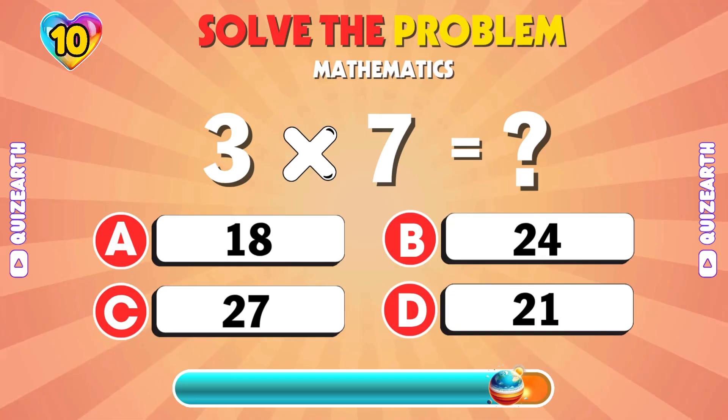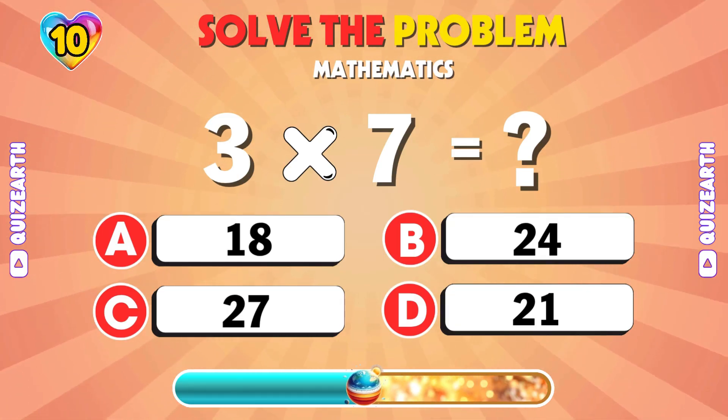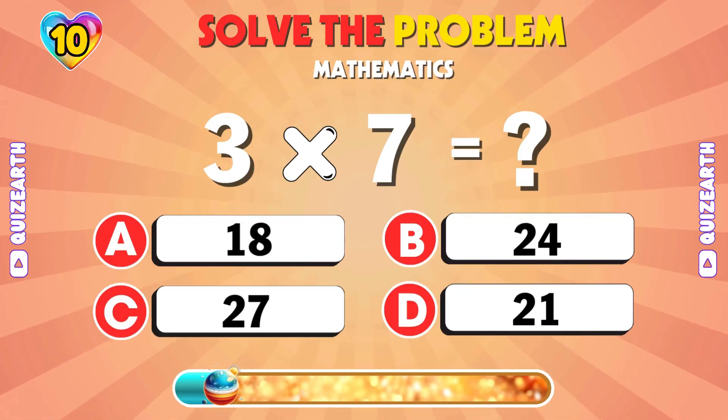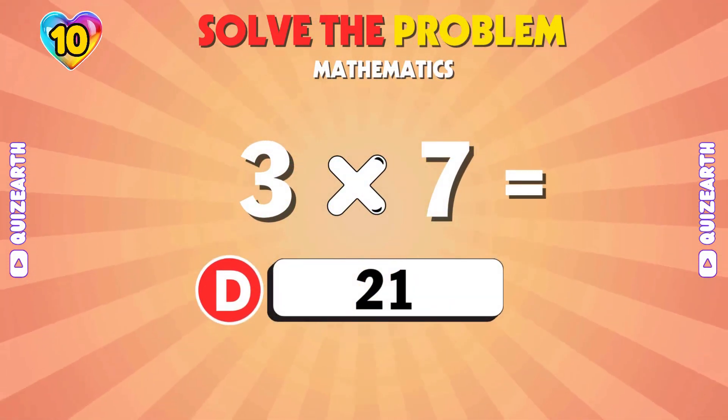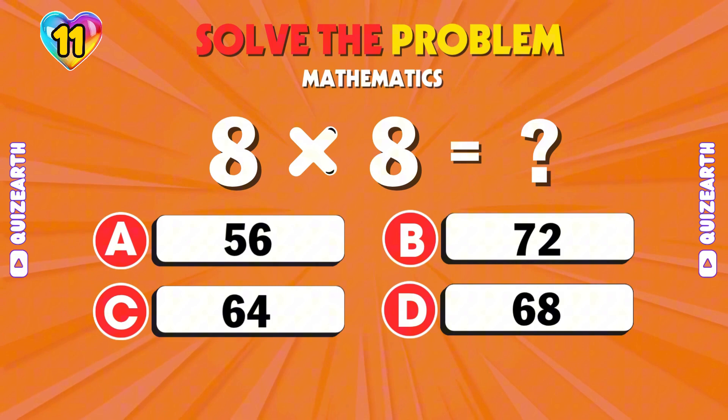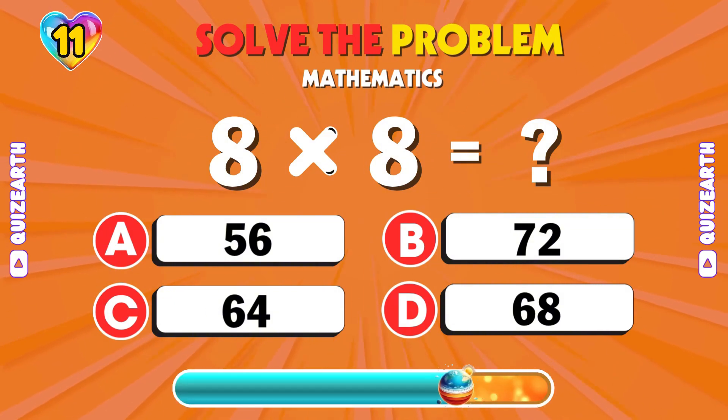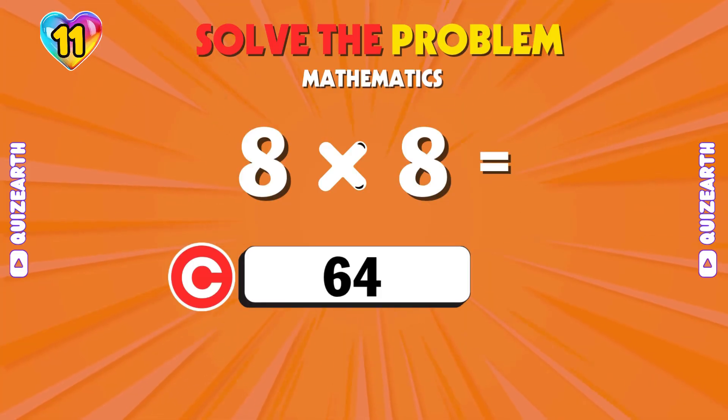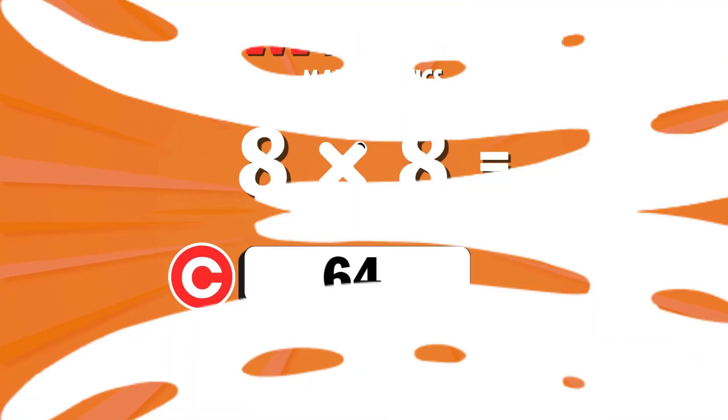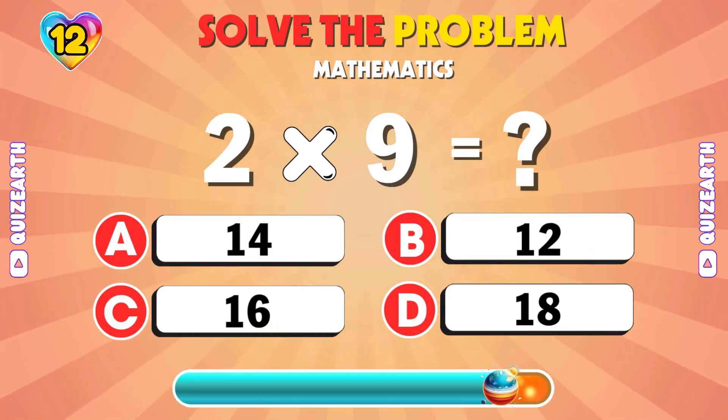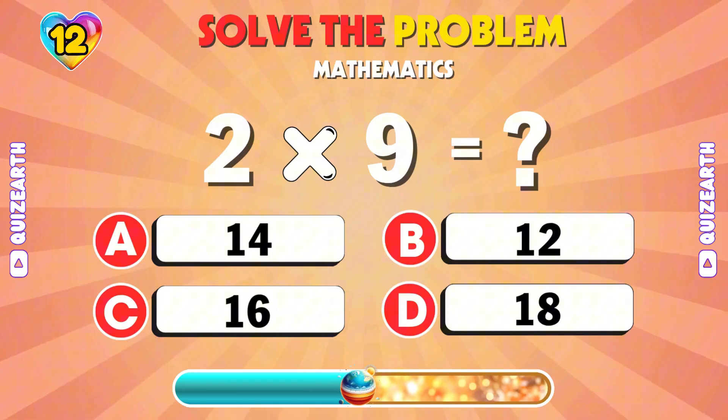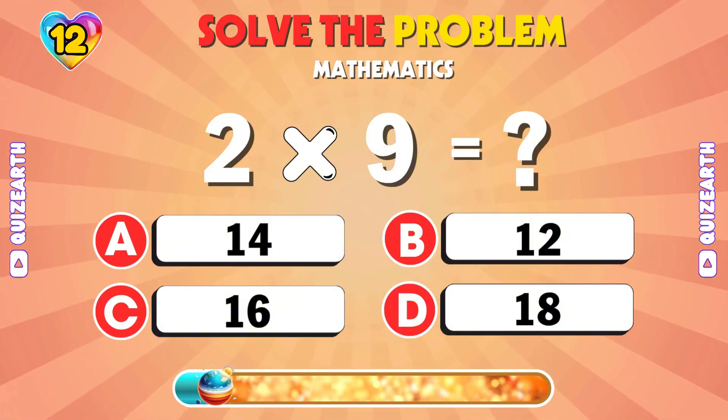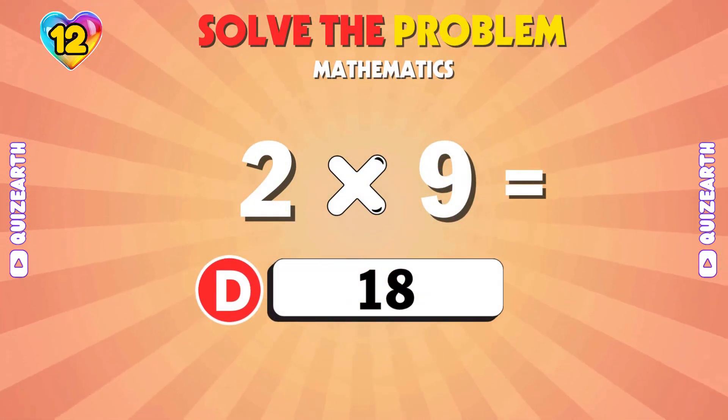Your next one. 3 times 7? Locked in 21. Fast math. Solve 8 times 8? That's 64. Time's ticking. 2 times 9? 18.